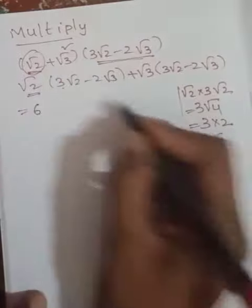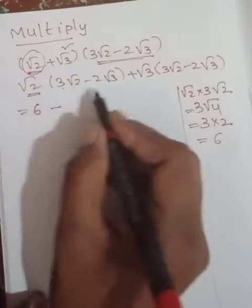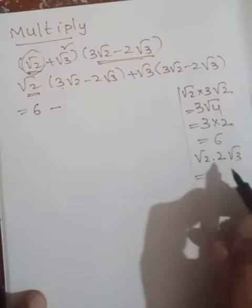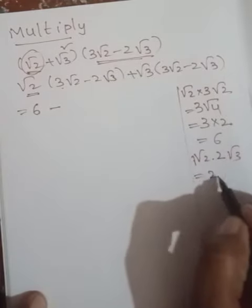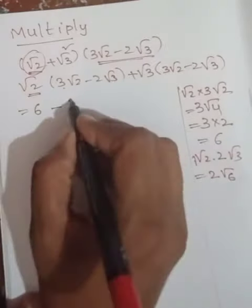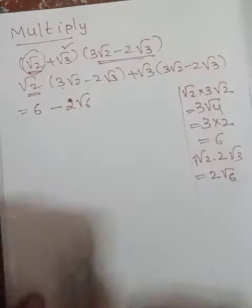Next we have minus √2 × 2√3. Very simple, don't get confused: 1 × 2 is 2, √3 × √2 is √6. You are getting 2√6.